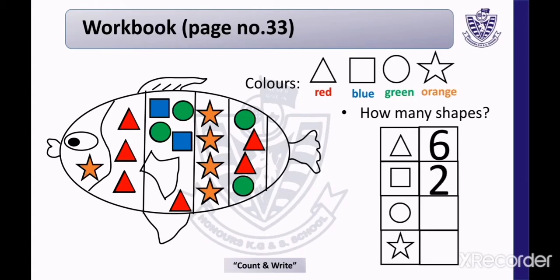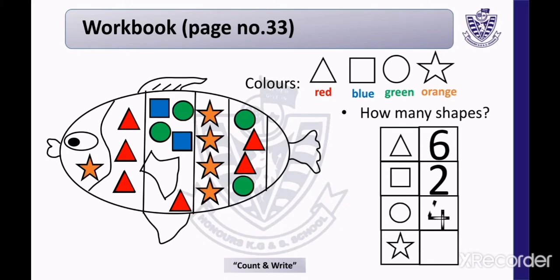Now we will count the circles — the green circles. Count with me — 1, 2, 3, 4. There are 4 circles. Now write number 4 in the given block.